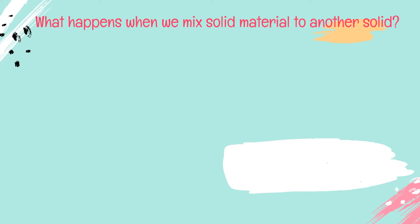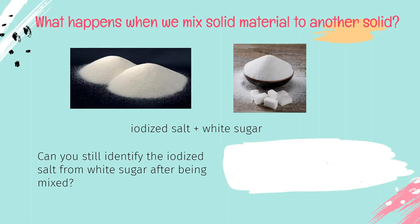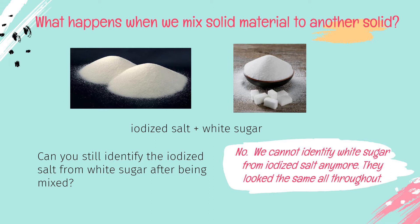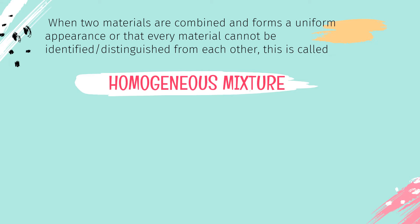What happens when we mix solid material with another solid? Just like when we mix iodized salt and white sugar — can you still identify the iodized salt from the white sugar after being mixed? The answer is no. We cannot identify white sugar from iodized salt anymore; they look the same all throughout. When two materials are combined and form a uniform appearance so that each material cannot be identified or distinguished from each other, this is called a homogeneous mixture.